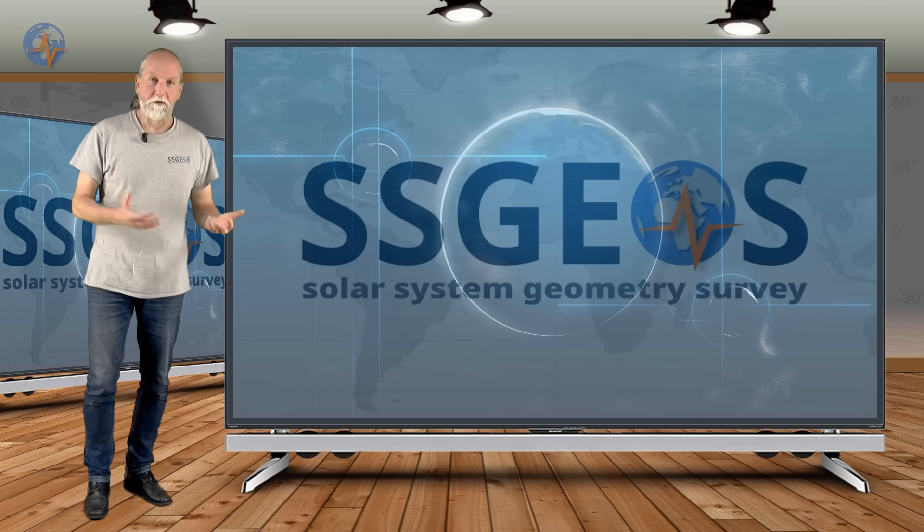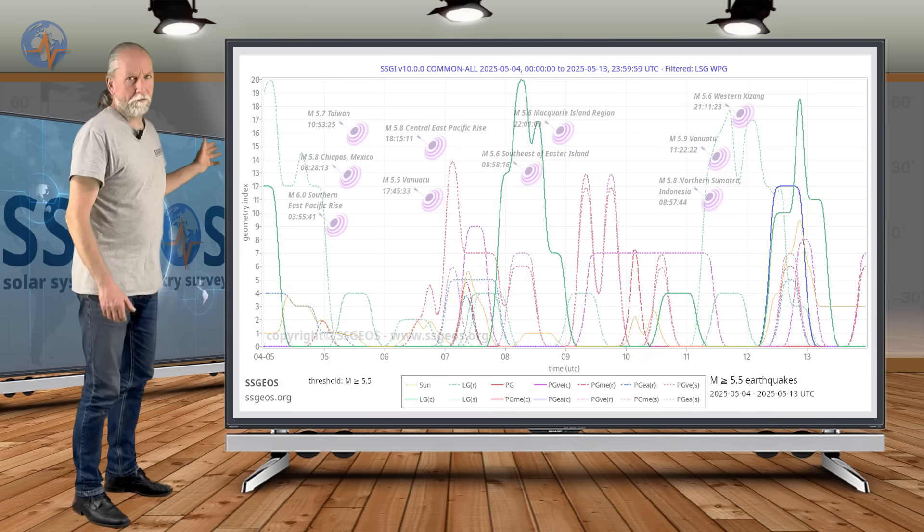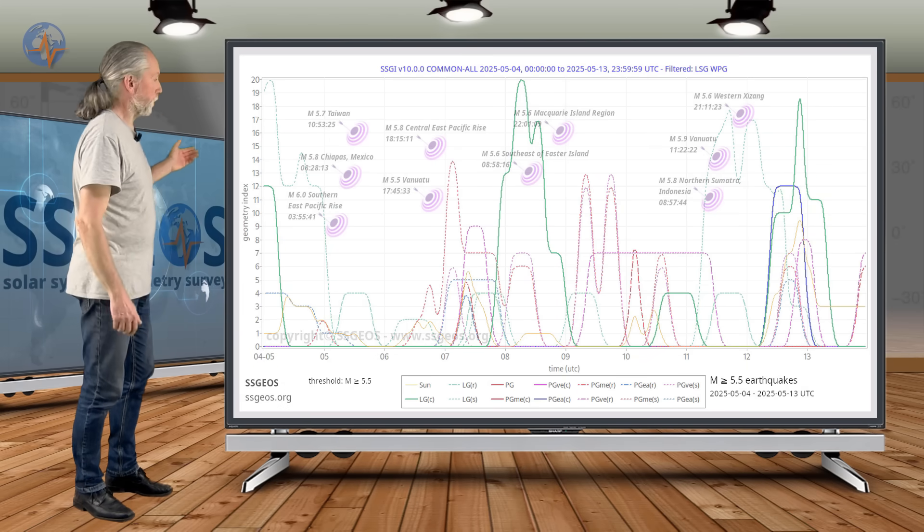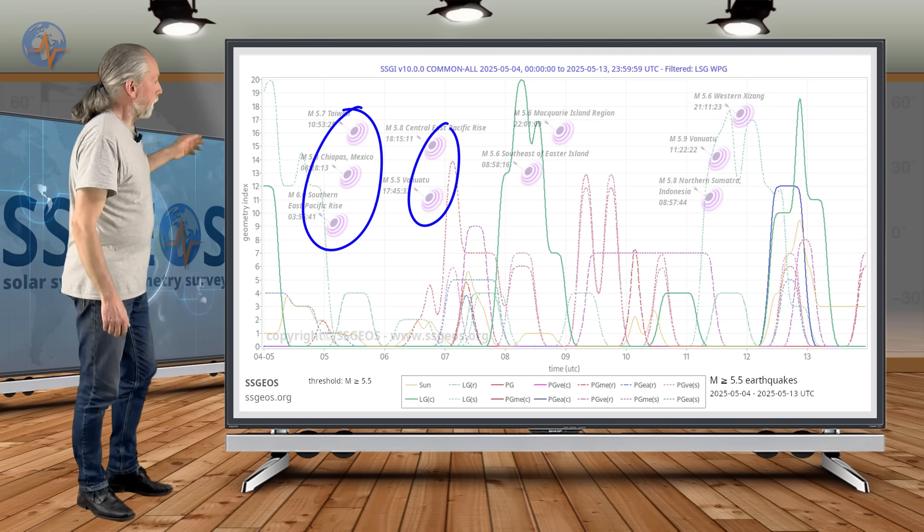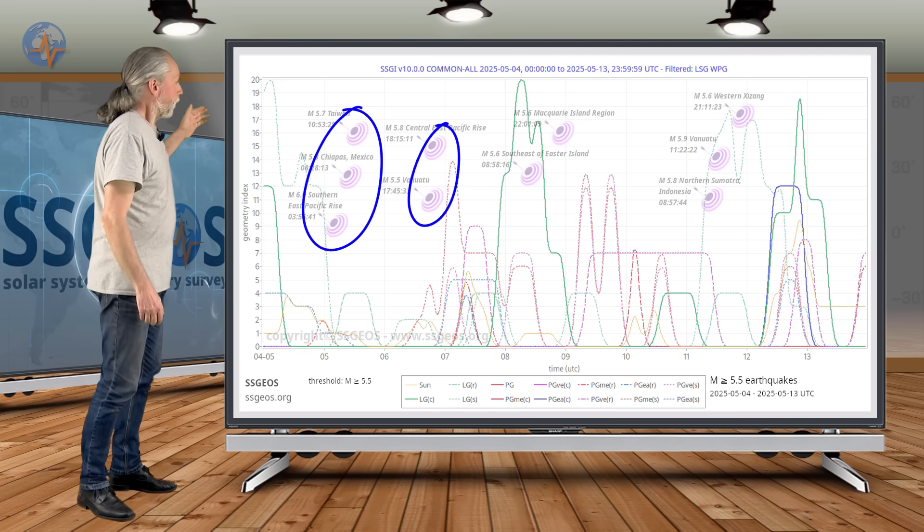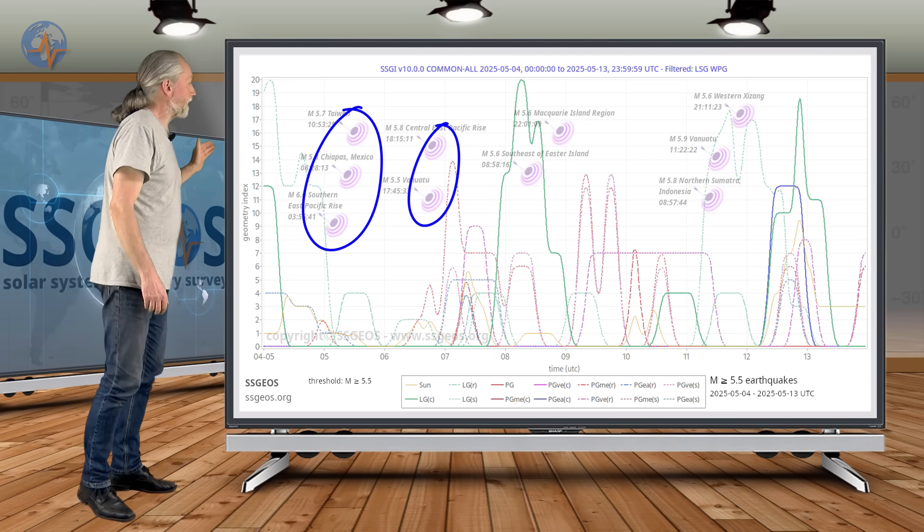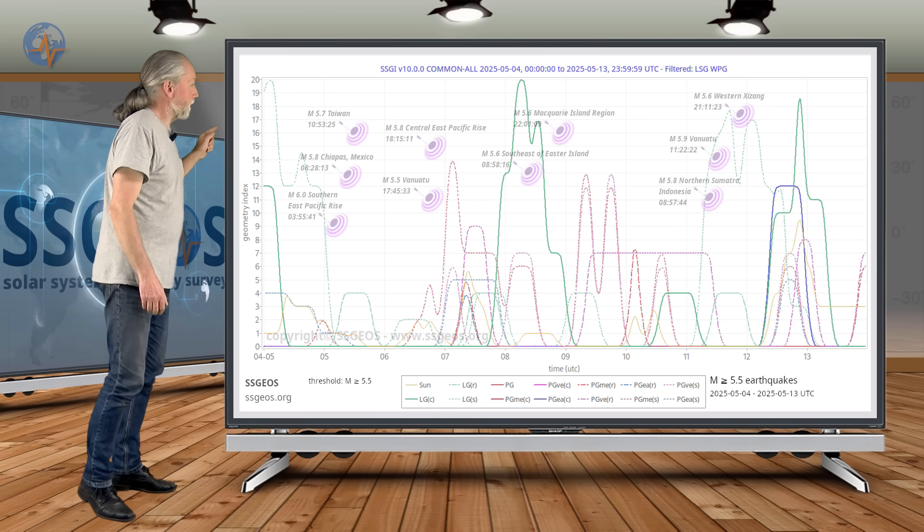First let's have a look at what we had in the previous time frame. Here on the SEGI graph we've mentioned 5.5 and larger earthquakes. We see the typical clustering, 3 and 2 earthquakes clustering on the 5th, peaking magnitude 6 on the SEGI.